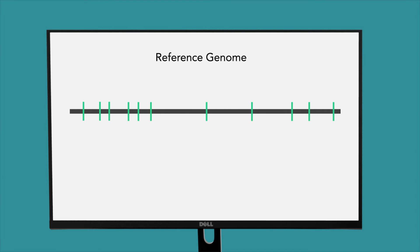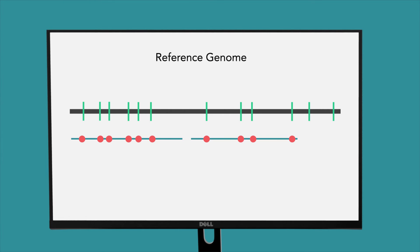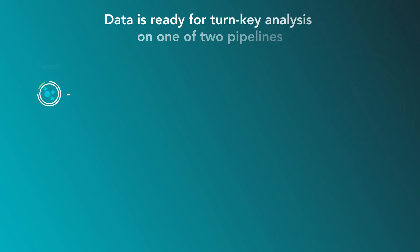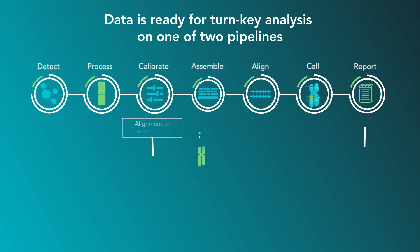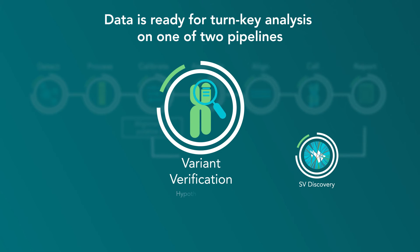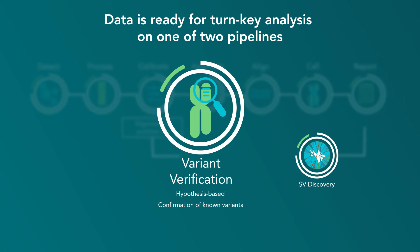While sample information is being collected, parallel processing transforms and calibrates tag locations on each molecule, resulting in single molecule maps with the location of each identified tag. From there, the data is ready for turnkey analysis on one of two pipelines. Variant verification is a hypothesis-based method to test for known variants and requires lower coverage for confirmation of a database of known variants.